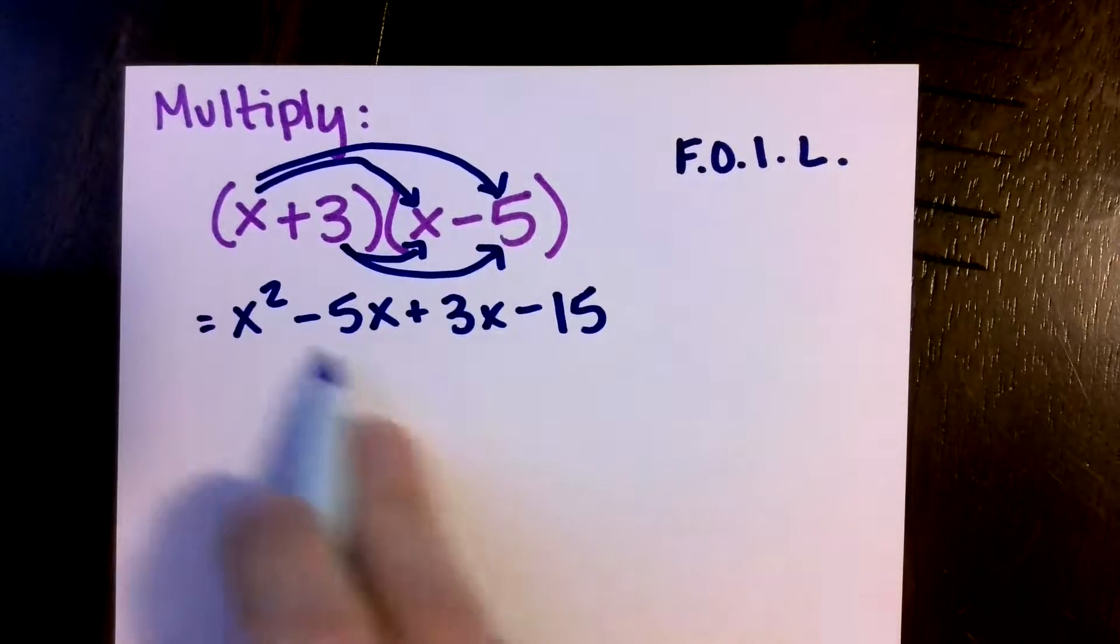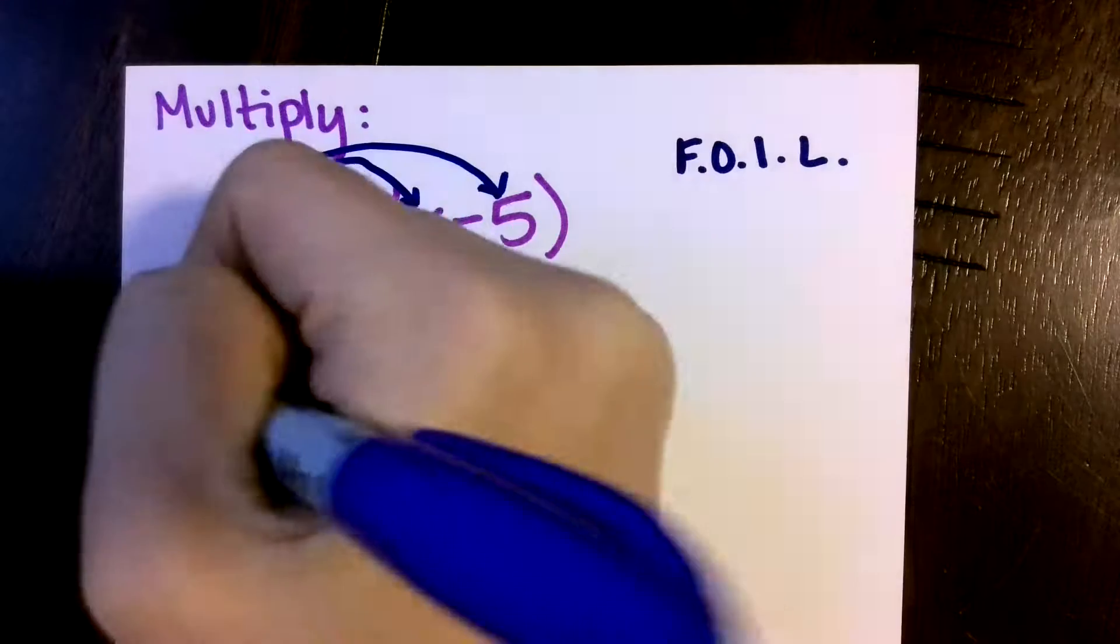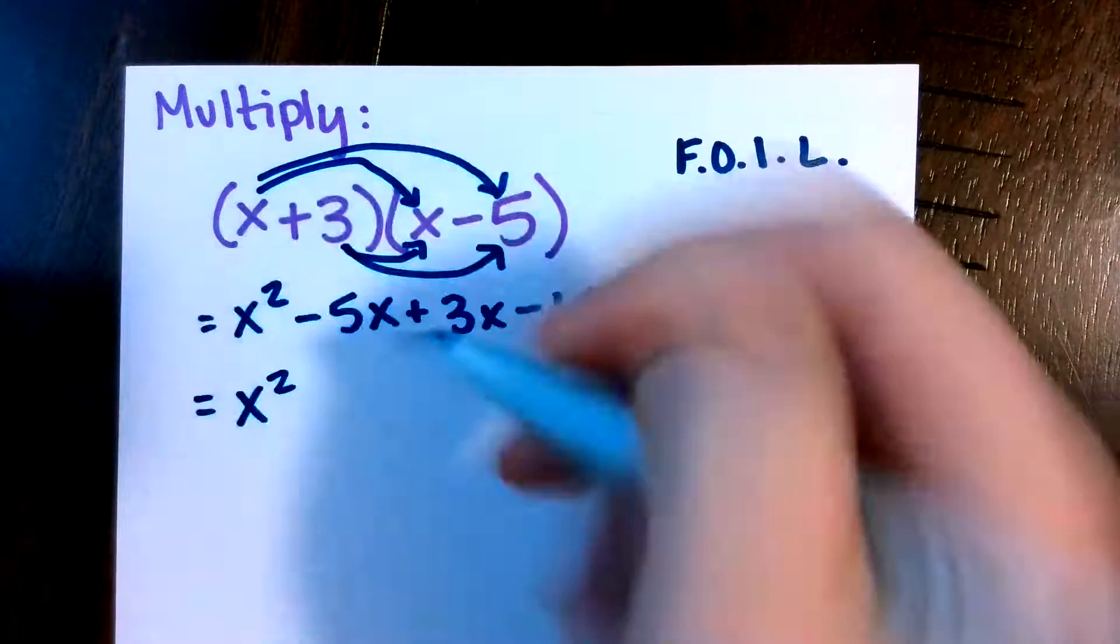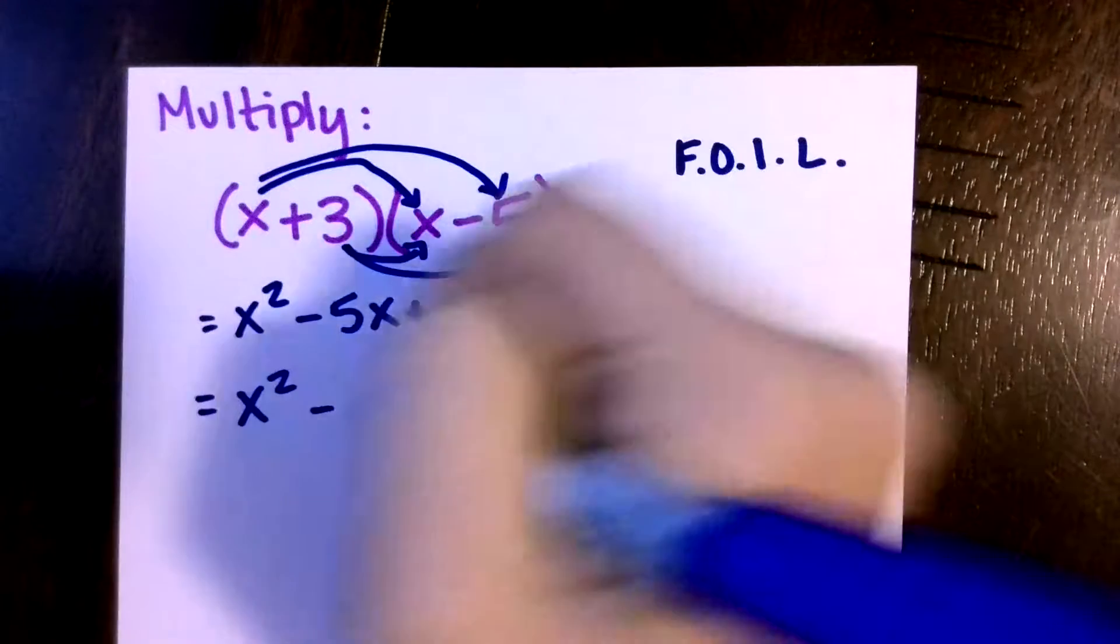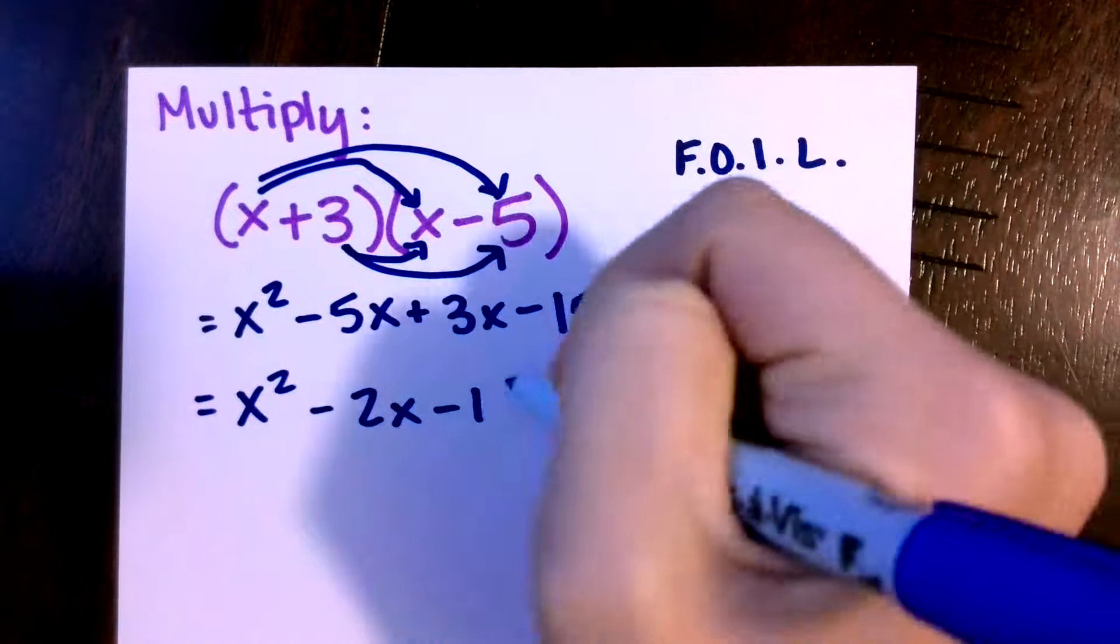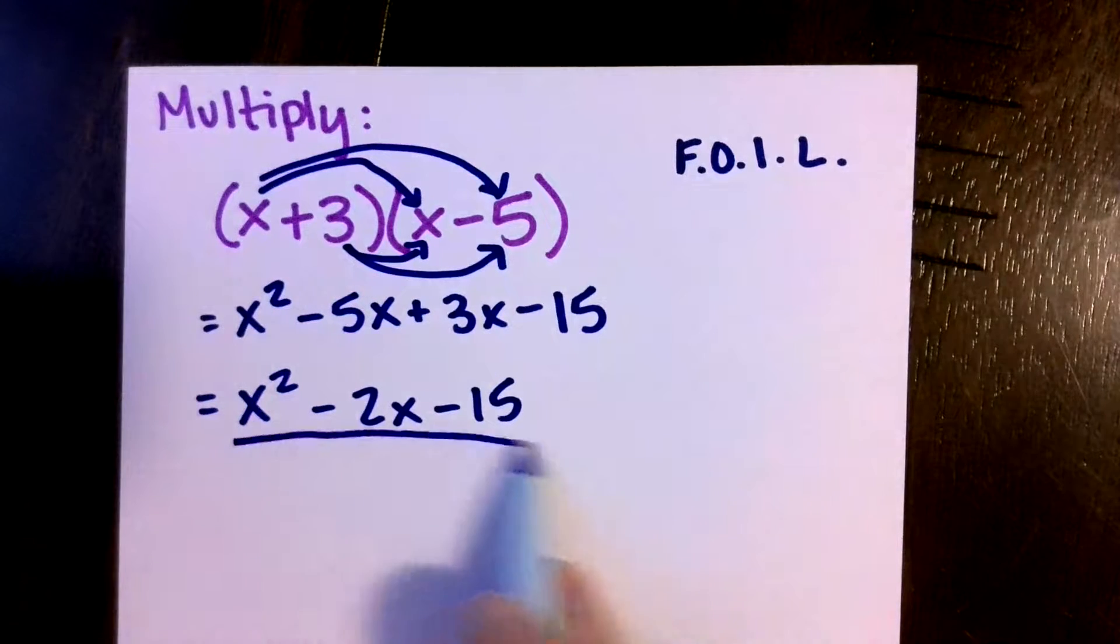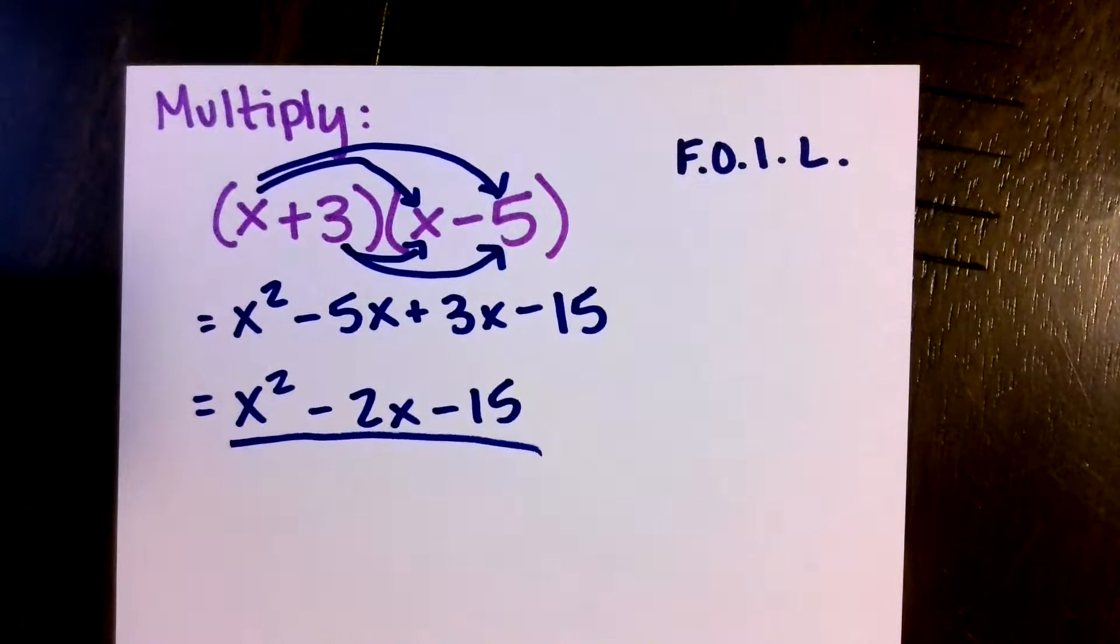So notice that we end up with these terms in the middle. You probably remember that happening, where we can combine them to be a negative 2x. And then we've got our quadratic in the end when we've multiplied.